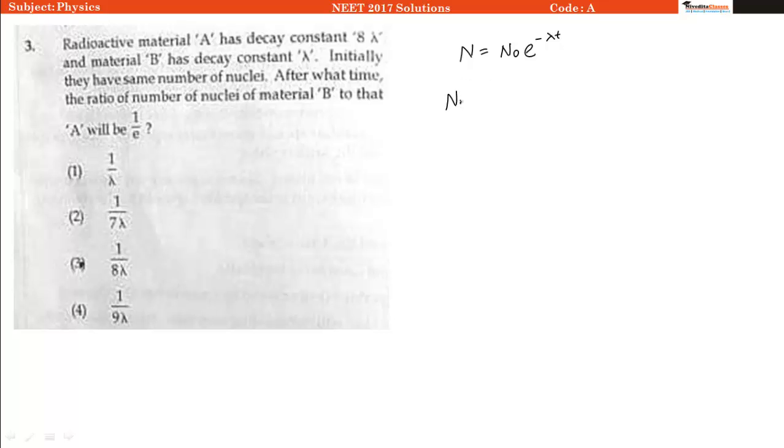So for A it will be N equals N naught e raise to power minus 8 lambda t, and for B the initial value is the same so it will be N naught e raise to power minus lambda t.